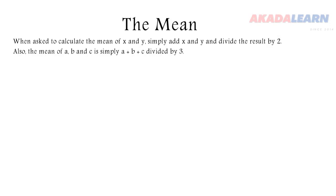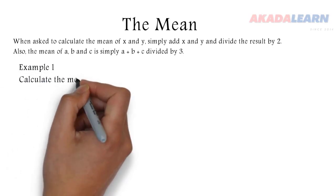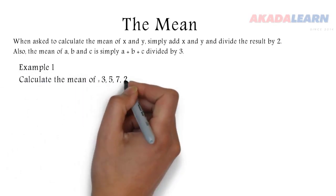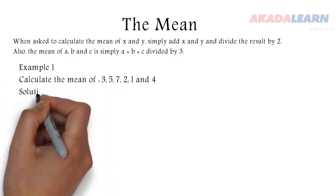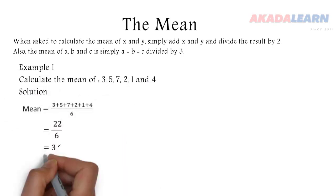Let's see example one: calculate the mean of 3, 5, 7, 2, 1, and 4. We add up those numbers then divide by six, and we discover our mean is 3.66.